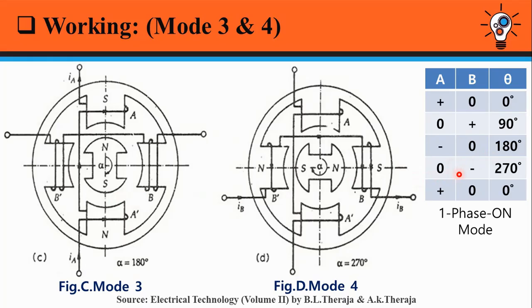In mode 4, phase A is not excited and phase B is excited with negative IB current. That is, the current flows from B' towards B.